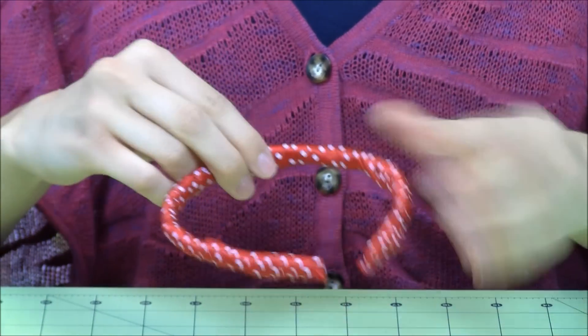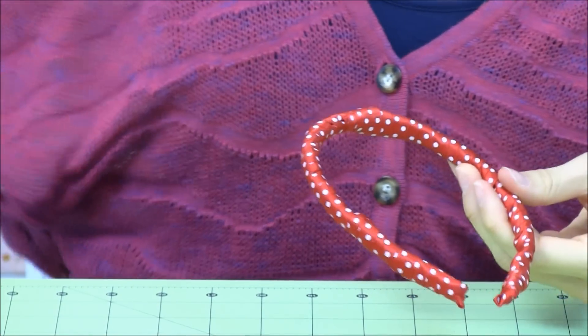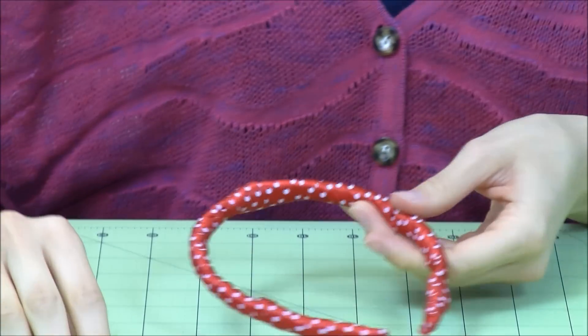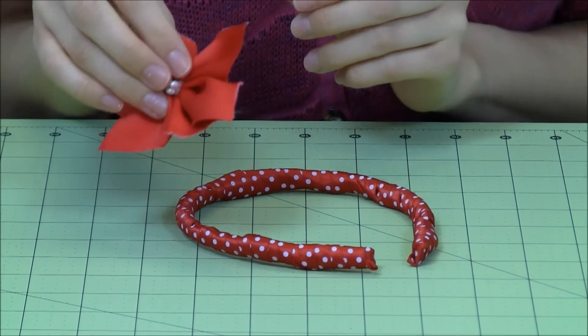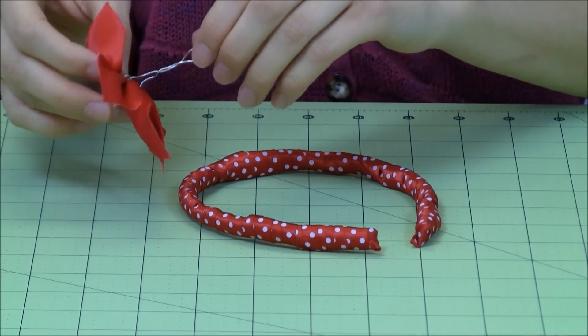Okay, so we've got our headband all covered. I'm sure you'll do a much better job with this at home. I'm just kind of trying to show you a little bit quicker here. But for our embellishment that we've made already, we already have some wire here on the back.